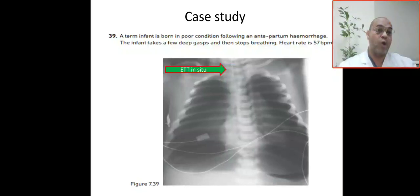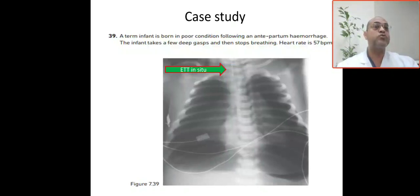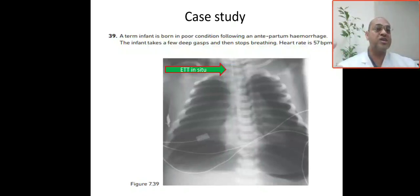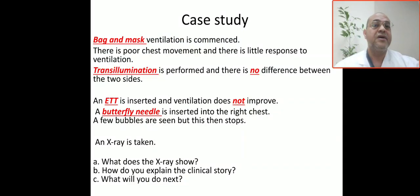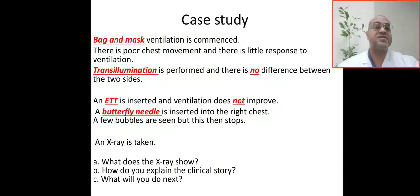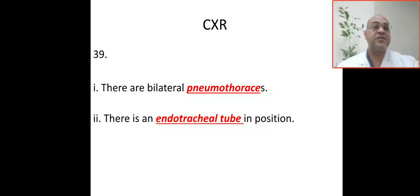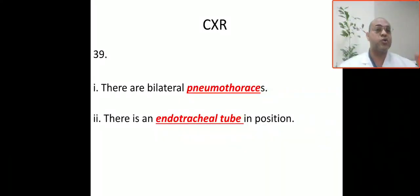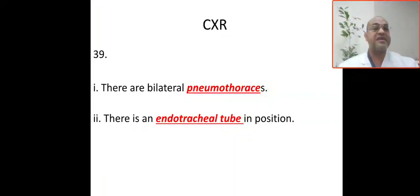You have to insert intercostal drains to drain bilaterally, just to drain the bilateral pneumothorax. The X-ray confirms bilateral pneumothorax, with the endotracheal tube in position and a butterfly needle visible.